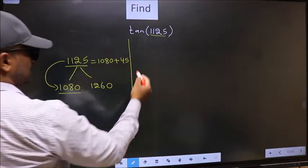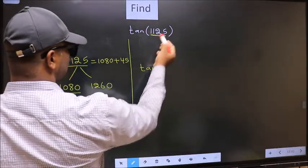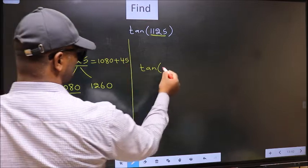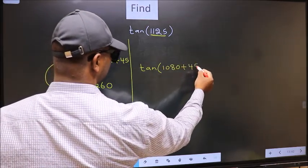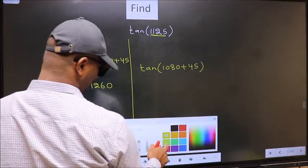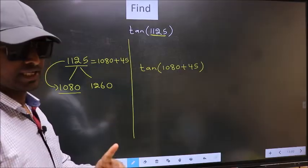So this will become tan. In place of this, we write 1080 plus 45. This is your step 1.